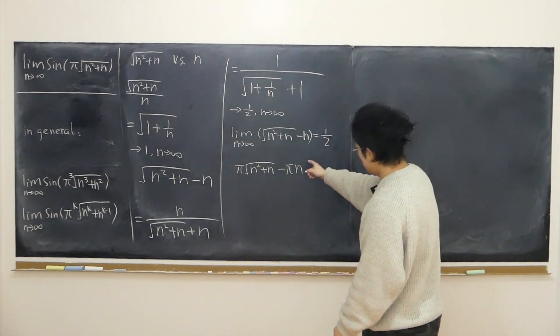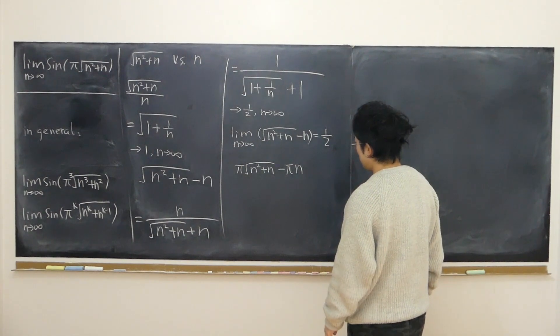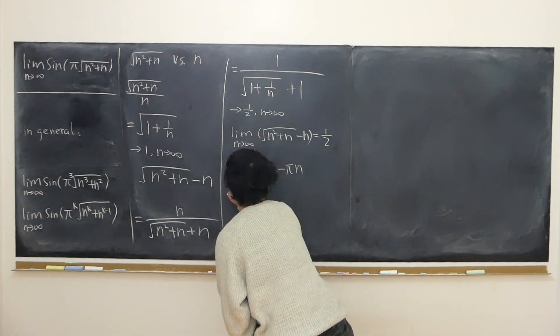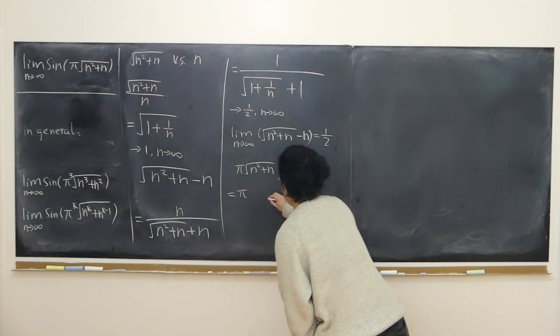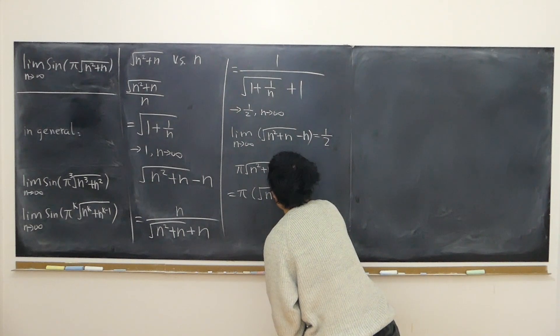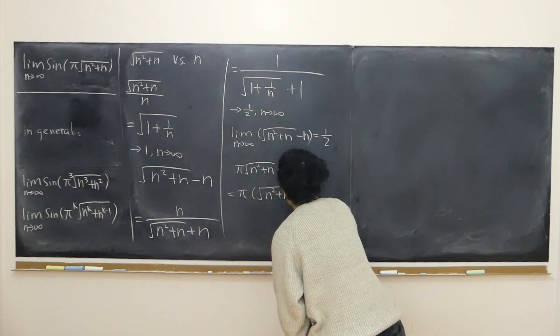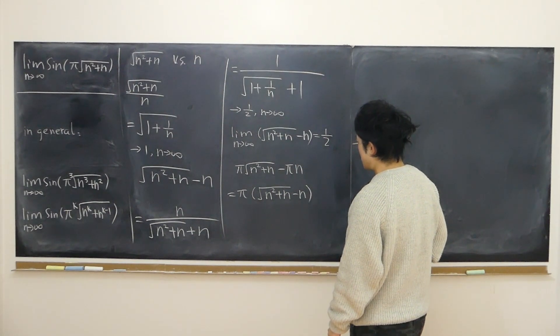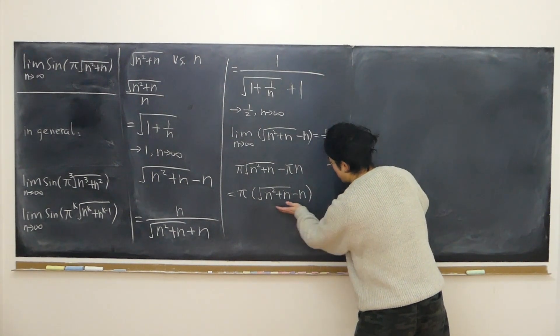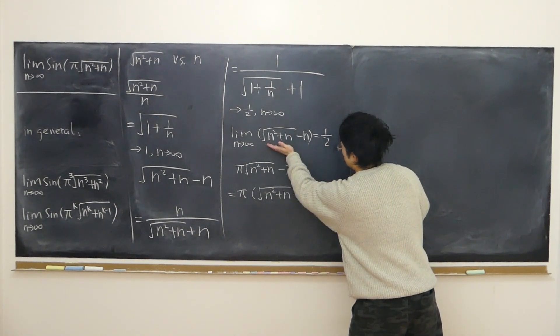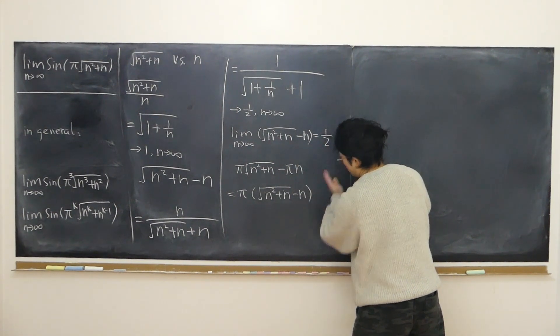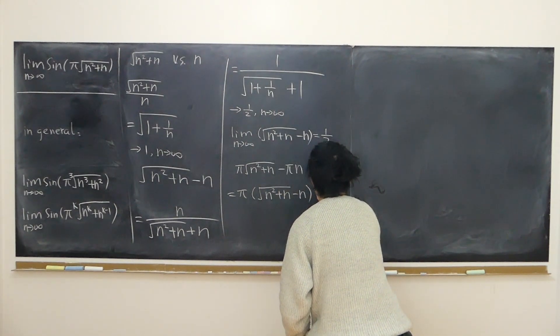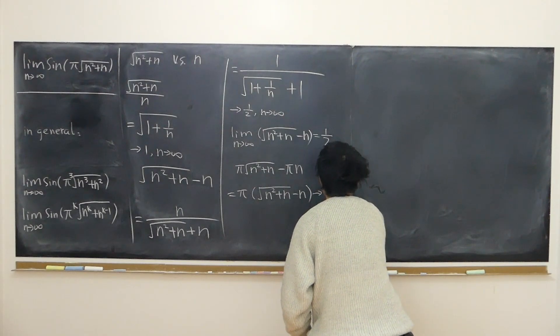Let me have a look at π times square root of n squared plus n minus πn. Later we'll discuss the case of n, whether it's even or odd. This equals π times (square root of n squared plus n minus n). This is very obvious. I've proven the limit of this is just half, so the limit of that must be half π.